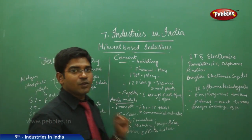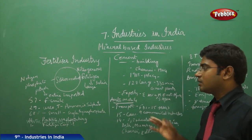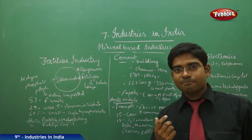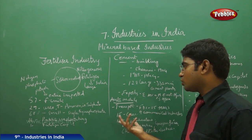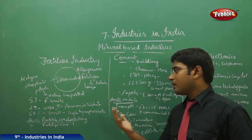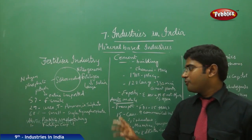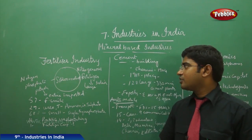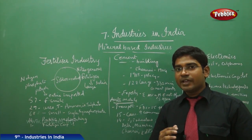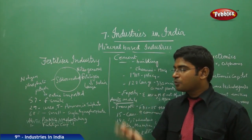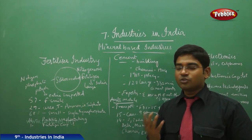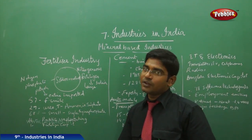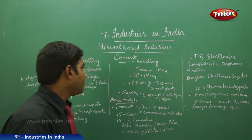India has nearly 57 fertilizer units, including 29 urea units, 9 ammonium sulfate units, and 68 small and large single super phosphate units. There are 10 public undertakings and one Fertilizer Corporation of India unit. India has been developing very fast in fertilizer production, and is also exporting fertilizers to other nations. Many fertilizer plants are located in North Indian regions.